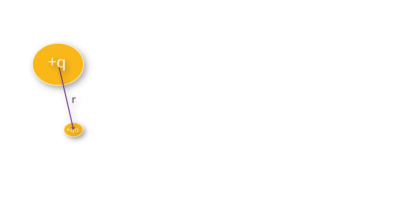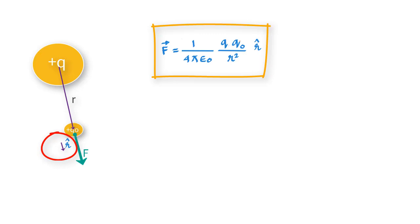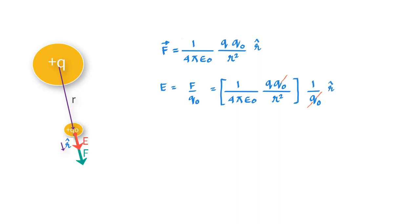Then from Coulomb's law, the force experienced by the test charge due to charge Q is given by the equation F equals 1 over 4π epsilon naught times Q times Q0 over r squared times r cap, where r cap is a unit vector pointing in the direction of the force. We can then define electric field at that point as force per unit charge, or E equals F over Q0, or E equals 1 over 4π epsilon naught Q over r squared r cap.